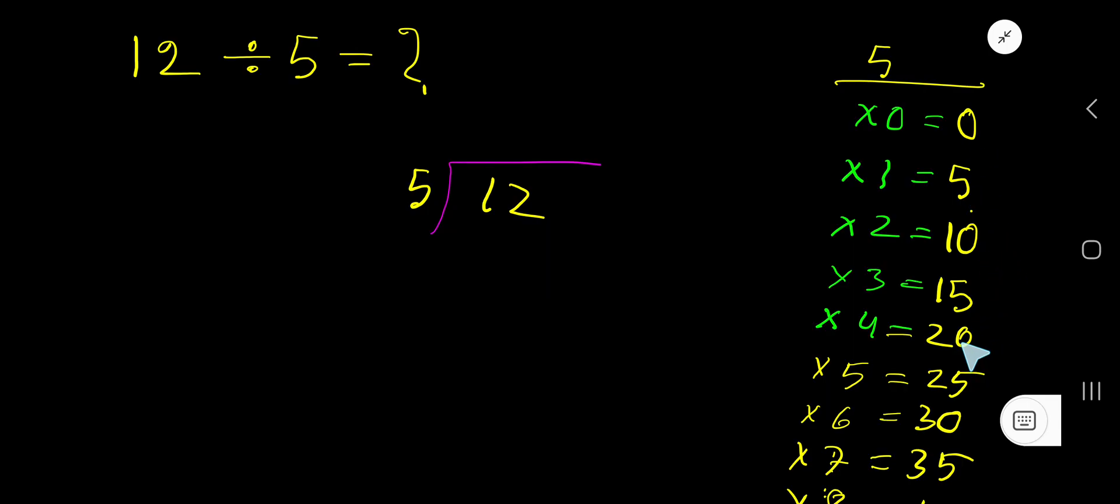15 plus 5 is 20. Look, 5 goes into this 1 how many times? 5 goes into 1 zero times, as 1 is less than 5. So 0 times 5 is 0. If you subtract, then you are getting 1. Bring down this 2.